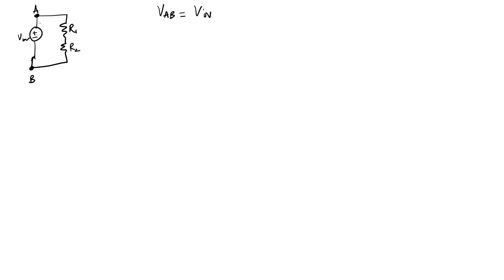At the same time, resistor R1 and resistor R2 are in series with each other, and R1 and R2 combined are also between nodes A and B. So the voltage of R1 plus the voltage of R2 equals the input voltage. Now let's label the current coming out of the source — let's call that current I. There are no branches here, so that current goes through R1, goes through R2, and goes back. So the same current I flows through both R1 and R2.